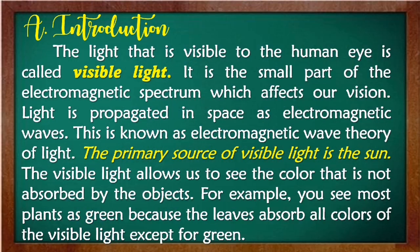The light that is visible to the human eye is called visible light. It is the small part of the electromagnetic spectrum which affects our vision. Light is propagated in space as electromagnetic waves — this is known as the electromagnetic wave theory of light. The primary source of visible light is the sun. The visible light allows us to see the color that is not absorbed by the objects. For example, you see most plants as green because the leaves absorb all colors of the visible light except for green.